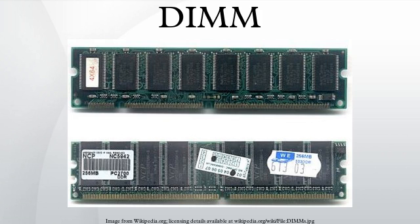On the bottom edge of 168-pin DIMMs there are two notches, and the location of each notch determines a particular feature of the module. The first notch is the DRAM key position, representing RFU, registered, and unbuffered. The second notch is the voltage key position, representing 5.0V, 3.3V, and reserved. The upper DIMM in the photo is an unbuffered 3.3V 168-pin DIMM.